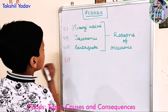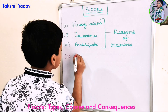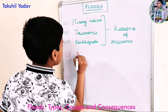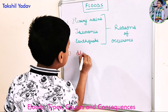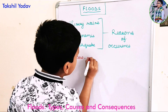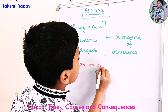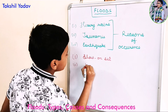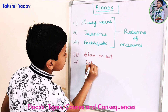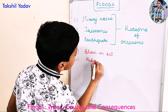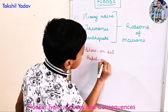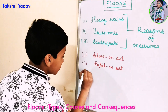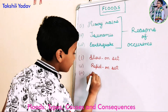The three types of floods are: the first one is slow onset floods, the second one is rapid onset floods, and the third one is flash floods.